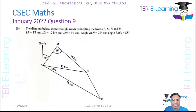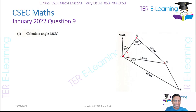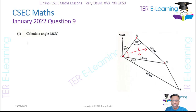For the next part of the question, the diagram shows straight routes connecting towns L, M, N, and R. They give us some angles and distances, and they want us to calculate angle MLN. Looking at triangle L, M, N — it's not a right-angle triangle, but I have an angle and the side opposite to the unknown angle, so I can use the sine rule.